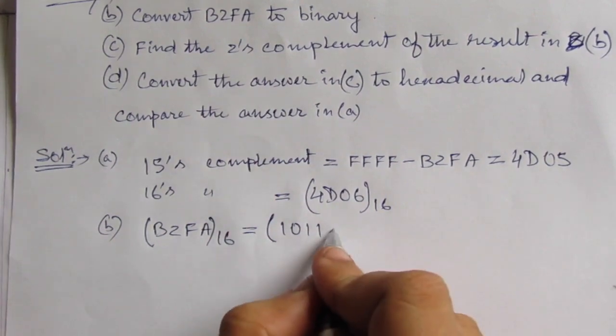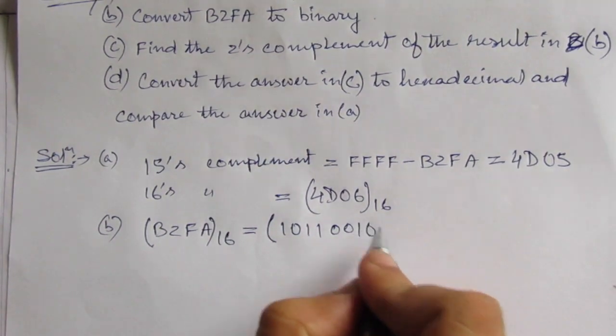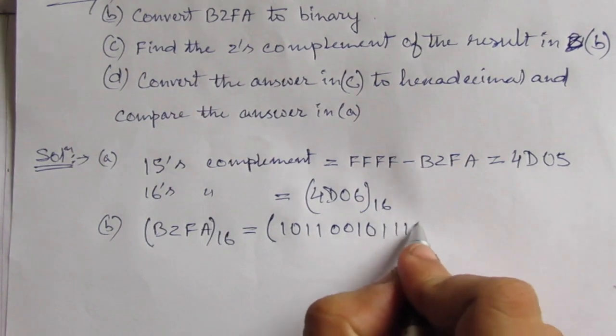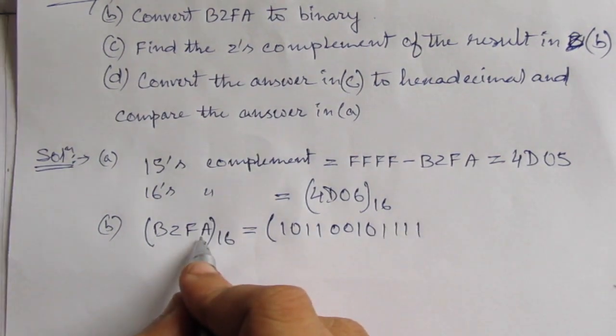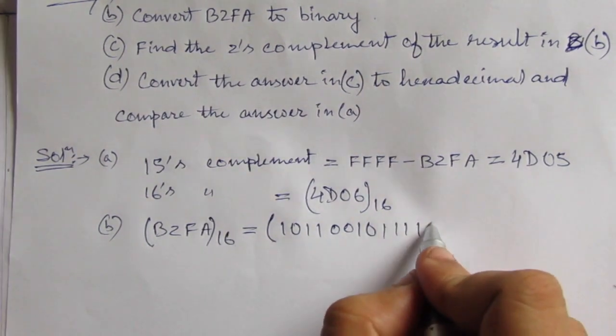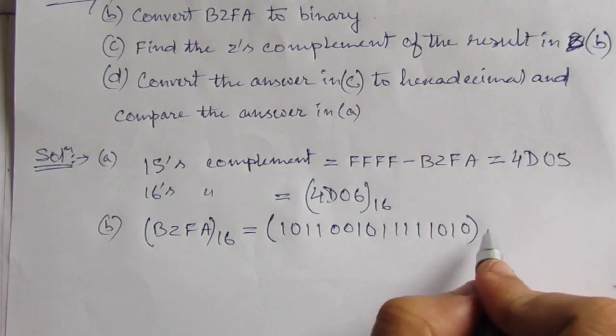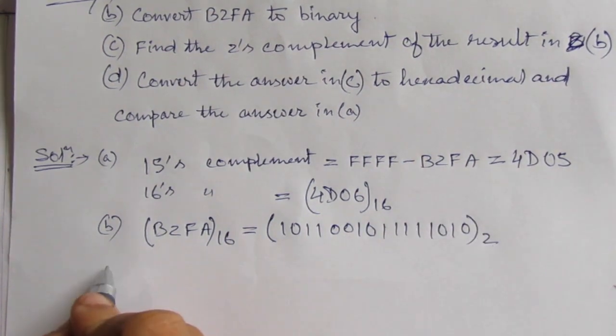B means we can write in binary as 1011. Then 2 is 0010. And for F, we can write 1111. And for A, A means 10 here, so it is 1010. So this is the binary equivalent. Then part C.